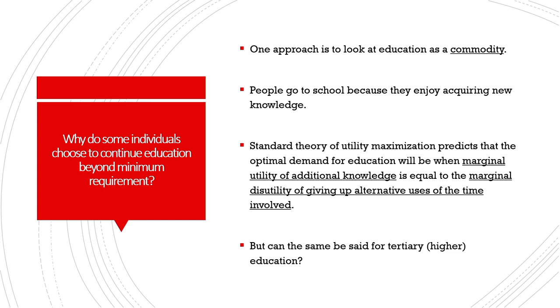The concept of human capital allows us to look at education as a form of commodity demanded in the market, but how much is demanded depends on many variables. People go to school because they enjoy acquiring knowledge, and the standard theory of utility maximization predicts that optimal demand for education is determined where the marginal utility of additional knowledge equals the marginal disutility of giving up alternative uses of time. Our optimal demand for education depends on the additional utility from gaining knowledge versus the opportunity cost of foregoing participation in the labor market today.